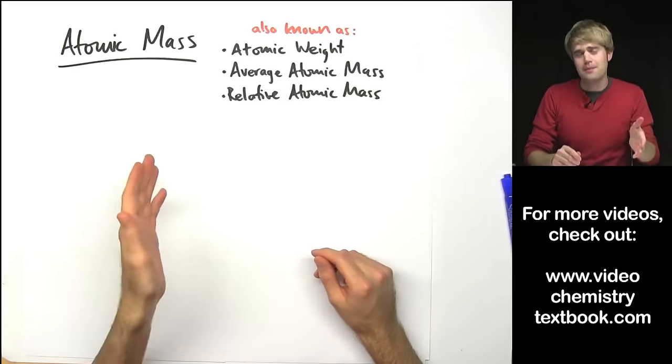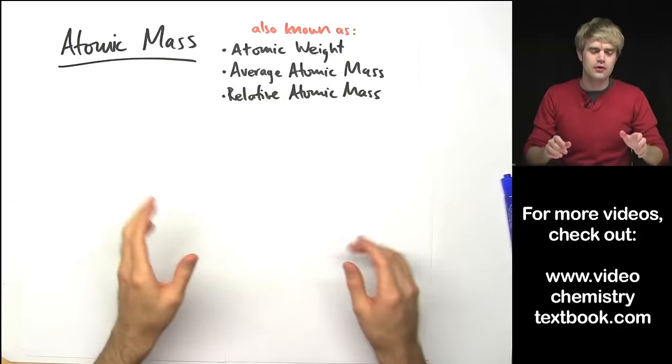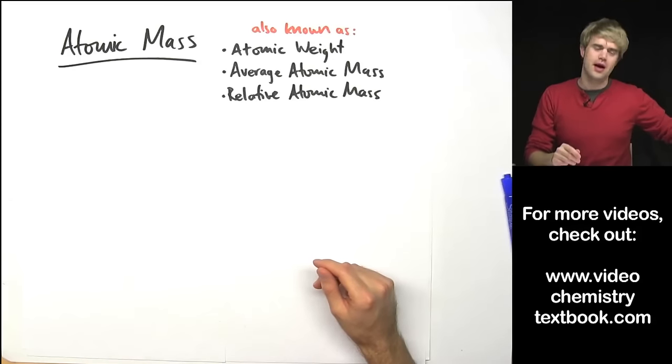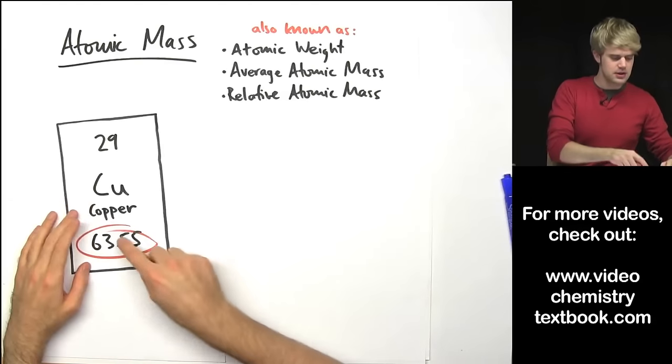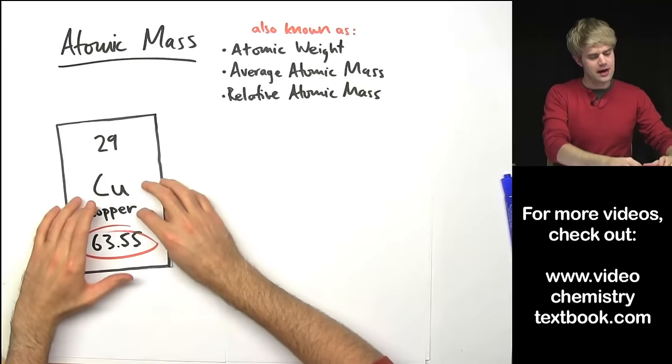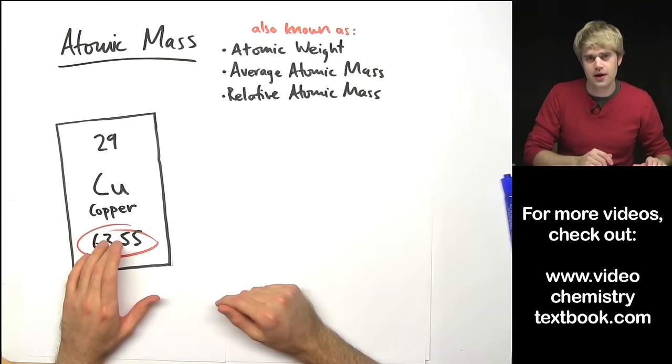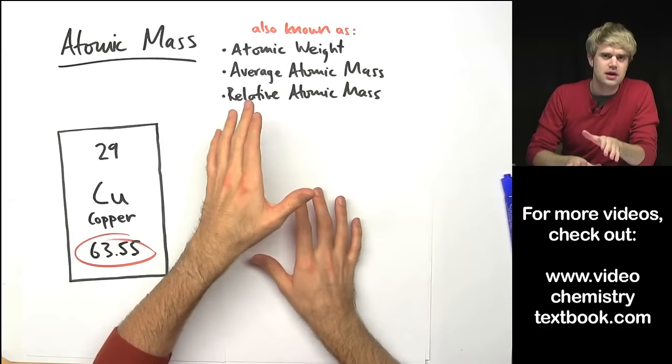Each element like copper, oxygen, sulfur, and so forth, each element has its own atomic mass. An atomic mass is this number that's written underneath the element sign on the periodic table.